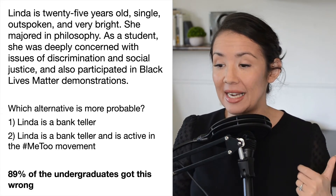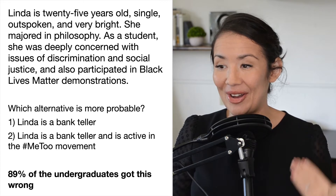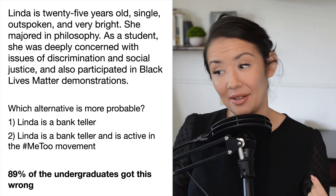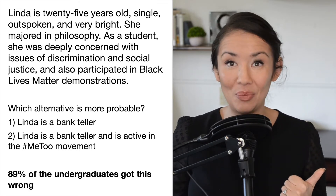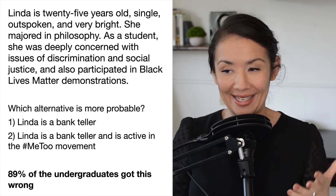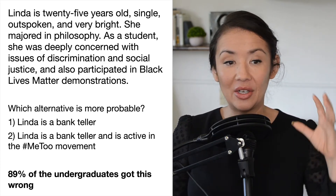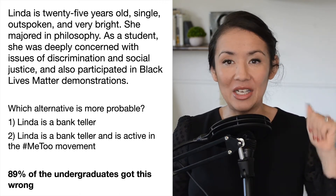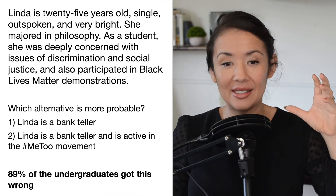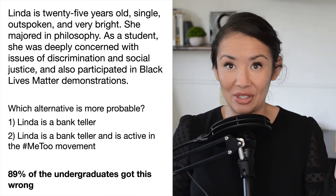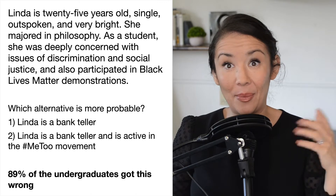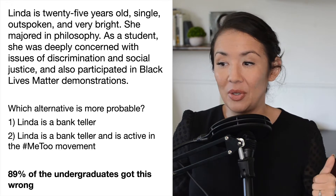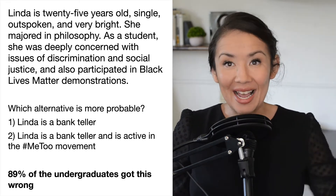What we find is 89% of undergraduates got this answer wrong, meaning they think that Linda is a bank teller and is active in the Me Too movement. Why would that be the case? Essentially, they are using their prototype of what people in the Me Too movement are like, and using that as their primary driver of their decision, rather than thinking about the base rate. The base rate of people who are bank tellers is much larger than the base rate of people who are bank tellers and active in the Me Too movement.